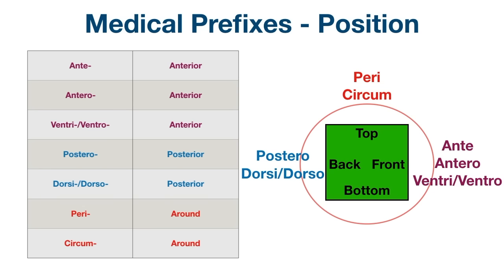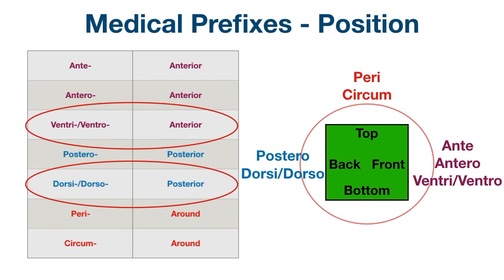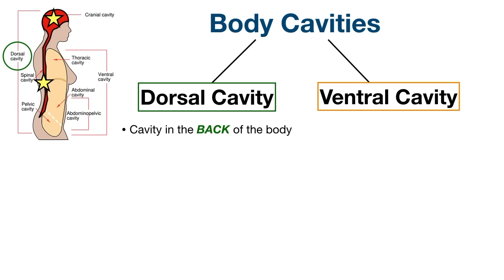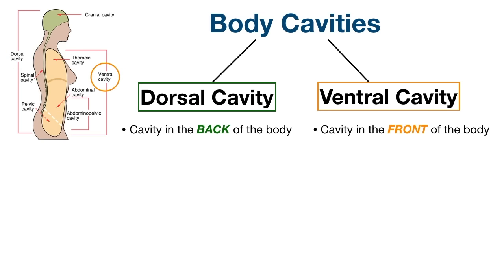From our medical prefix video, we learned that the prefix ventri means stomach, abdomen, toward the front, or the anterior aspect of the body, and the prefix dorsal means back or posterior. Now that we know dorsal means back and ventral means front, we can apply those terms to the dorsal and ventral cavities. The dorsal cavity is located in the back of the body, situated posterior to the ventral cavity. The ventral cavity is located in the front of the body, anterior to the dorsal cavity.